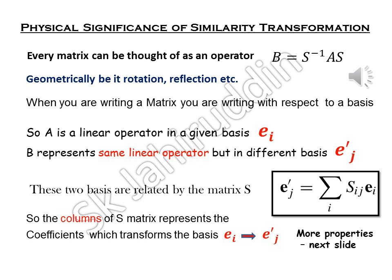These are two different bases. These two bases are related by your S matrix. Each and every column of your S matrix transforms one non-primed basis in which A has been represented to a primed basis in which B will be represented. Well, I think you got the point. We will be moving to more properties in the next slide.